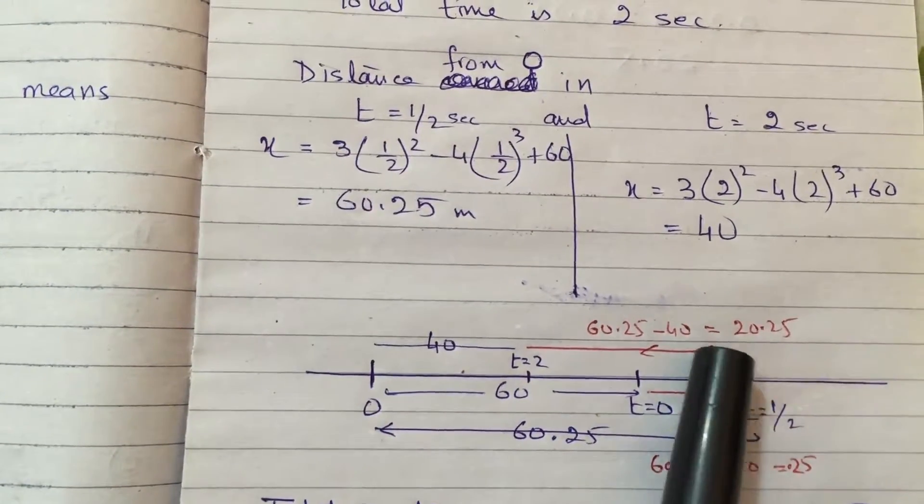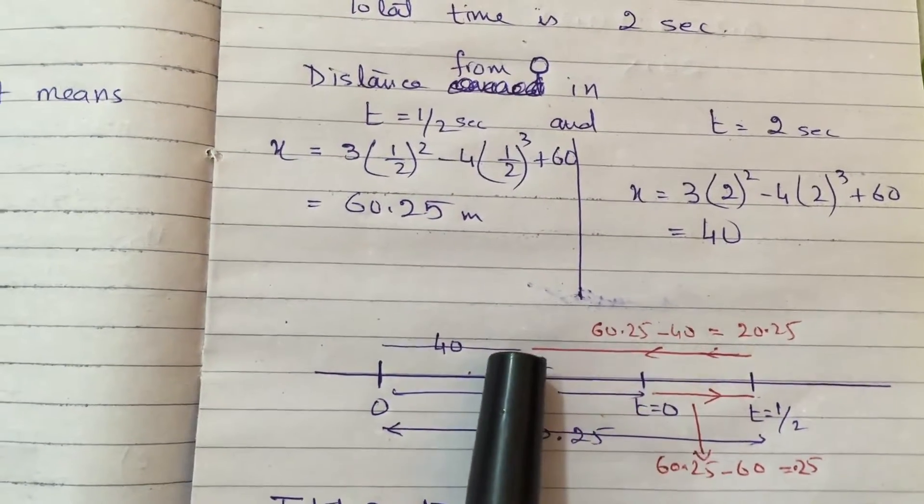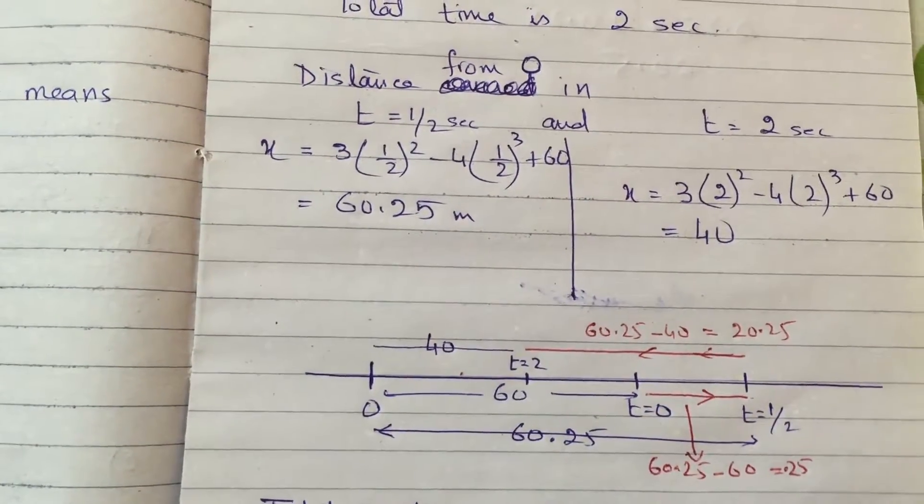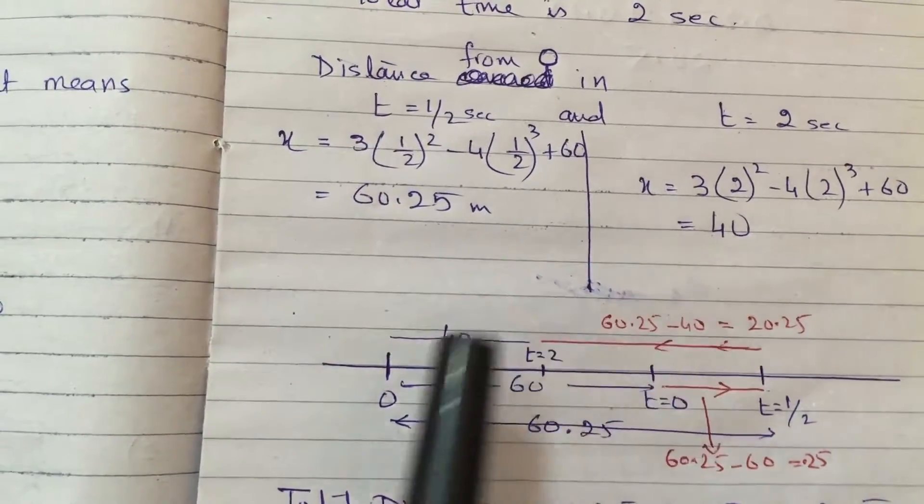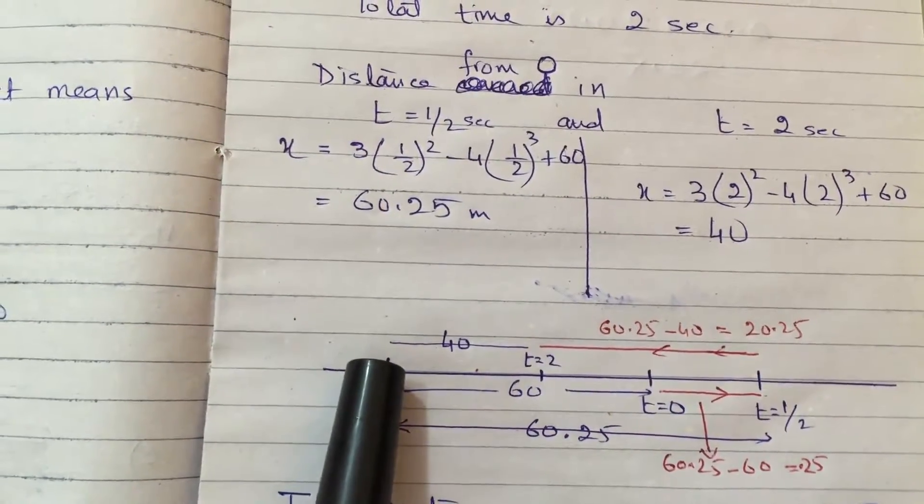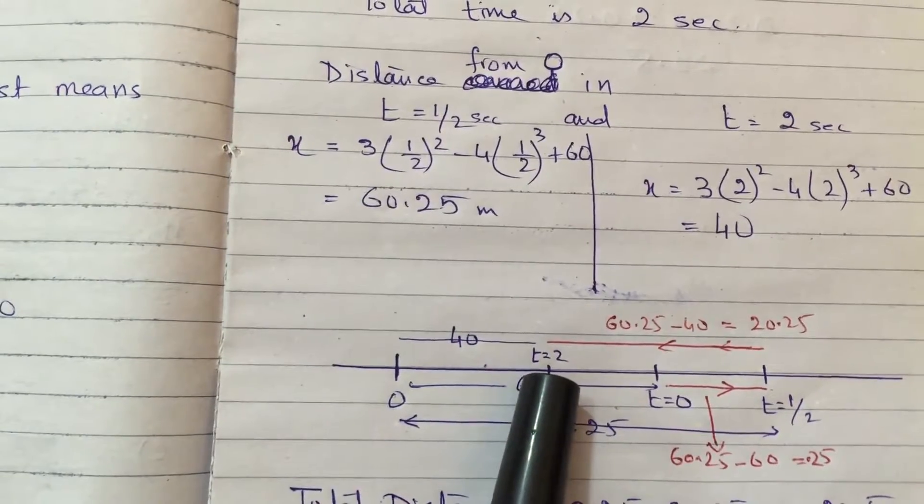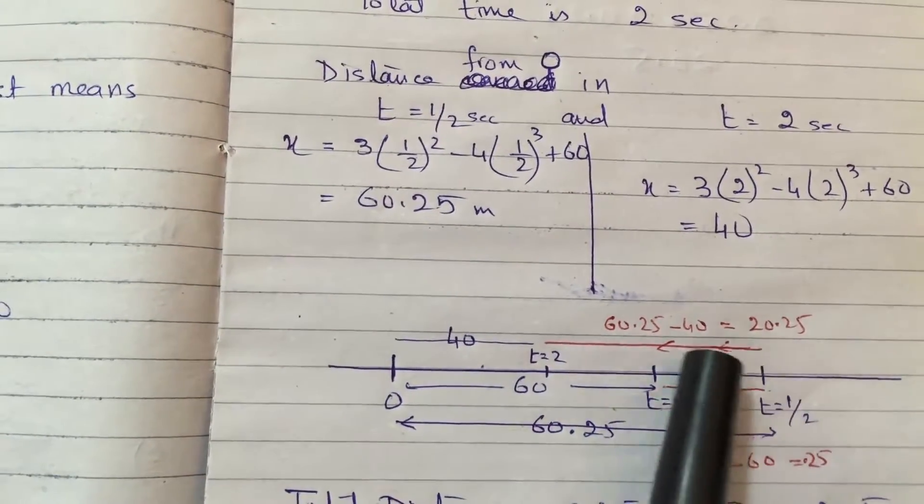Now at that time the object starts going back. So now when you put t equals 2, the answer is coming 40 meters. This 40 meters is telling you how far you are away from origin.